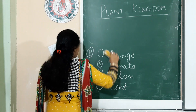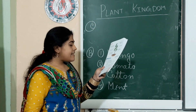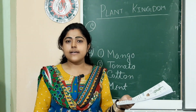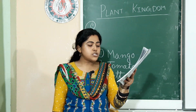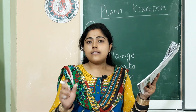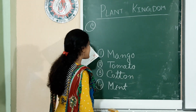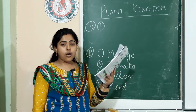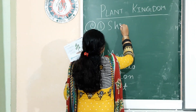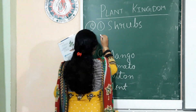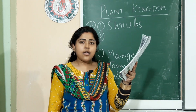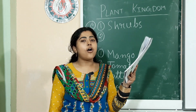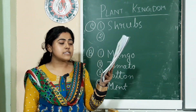Now come to question number C: complete the sentence with the help of the words given. The words are creepers and shrub. First question: Short and strong plants are called — the answer is shrubs. Second question: Plants that grow along the ground are called creepers.